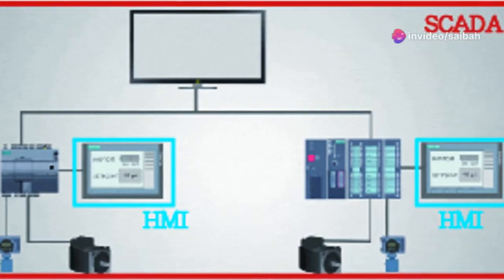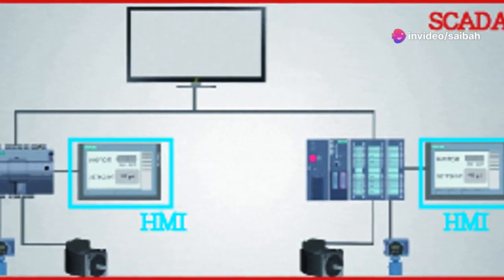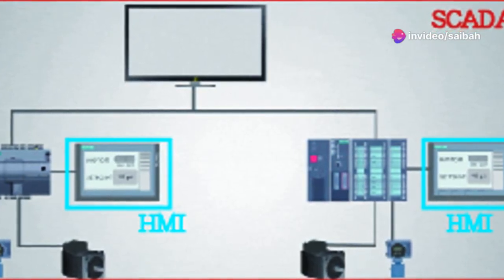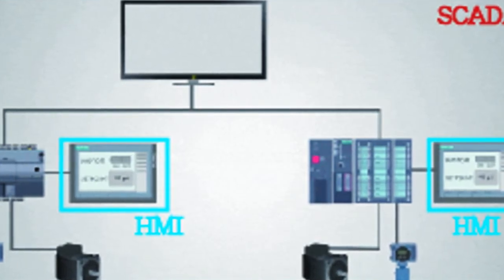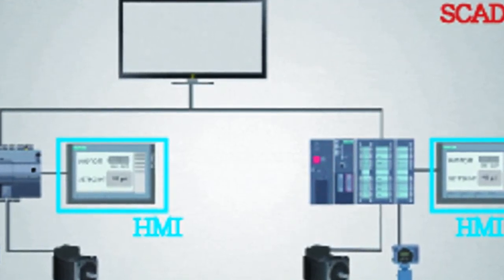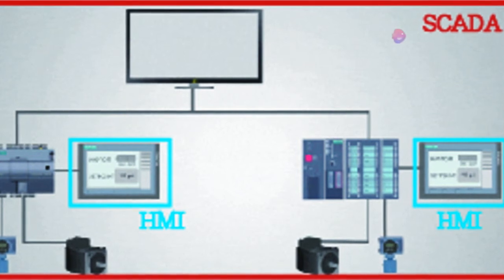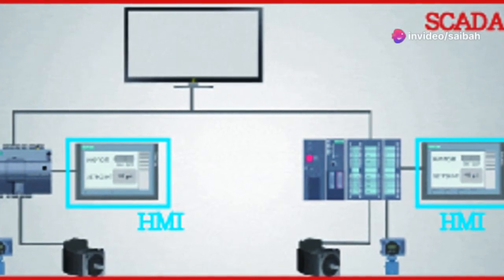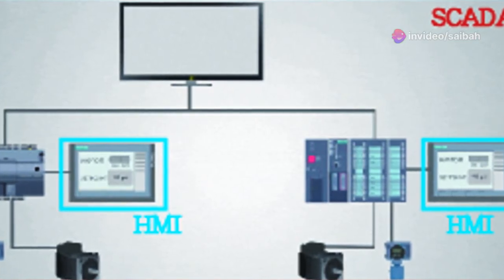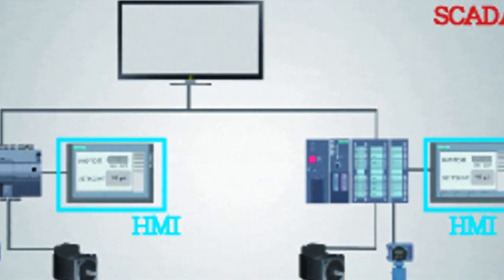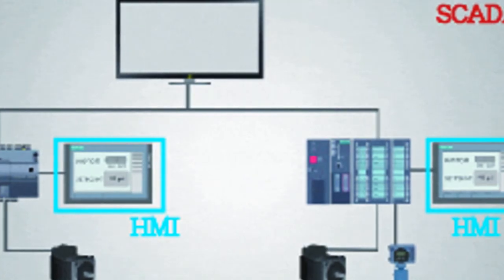The future of industrial control lies in the convergence of SCADA and HMI, creating integrated platforms that combine the power of centralized control with the intuitiveness of user-friendly interfaces. These next-generation systems will empower operators with real-time insights, predictive analytics, and enhanced control capabilities, ultimately driving efficiency, productivity, and safety in industrial operations.